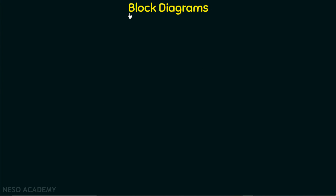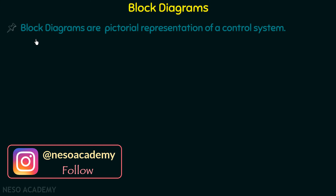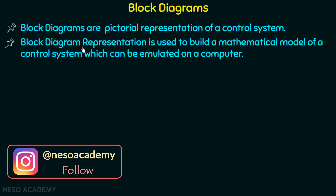We will discuss some important points of block diagrams. Point number one: block diagrams are pictorial representations of a control system. We are going to see some pictorial representations of a control system in block diagrams. Point number two: block diagram representation is used to build a mathematical model of a control system which can be emulated on a computer. It is a good point to understand.